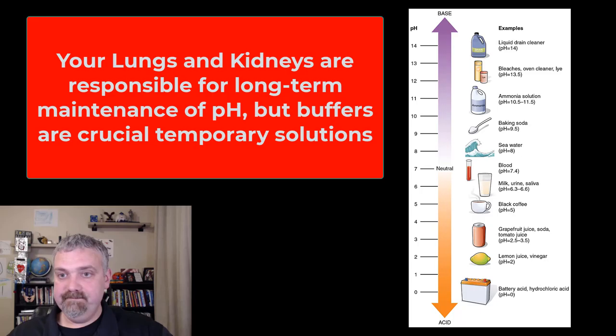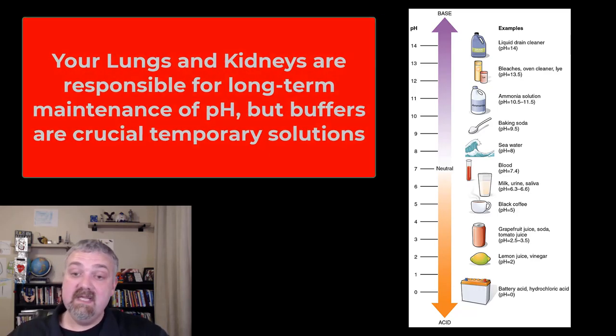Now long term, your body's pH is maintained by renal systems, renal compensation, and the respiratory system. Your kidneys and your lungs are primarily responsible for maintaining your pH by getting rid of excess acids in your body. But the buffers are going to be the temporary solutions, and they're super important because they can work quickly.